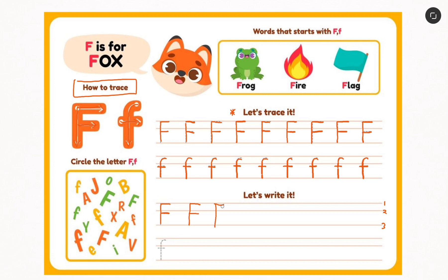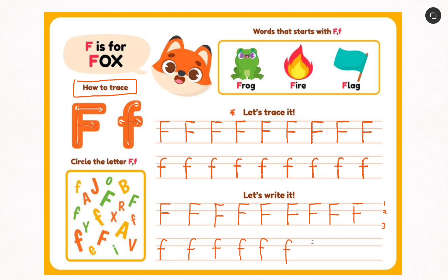So we continue — top, bottom, left, right, left, right — repeating that for each capital F. Now for small f, we go from top to bottom and then we cross it. We repeat the exact same thing for each small f. Very good. Now we know how to write the alphabet F.